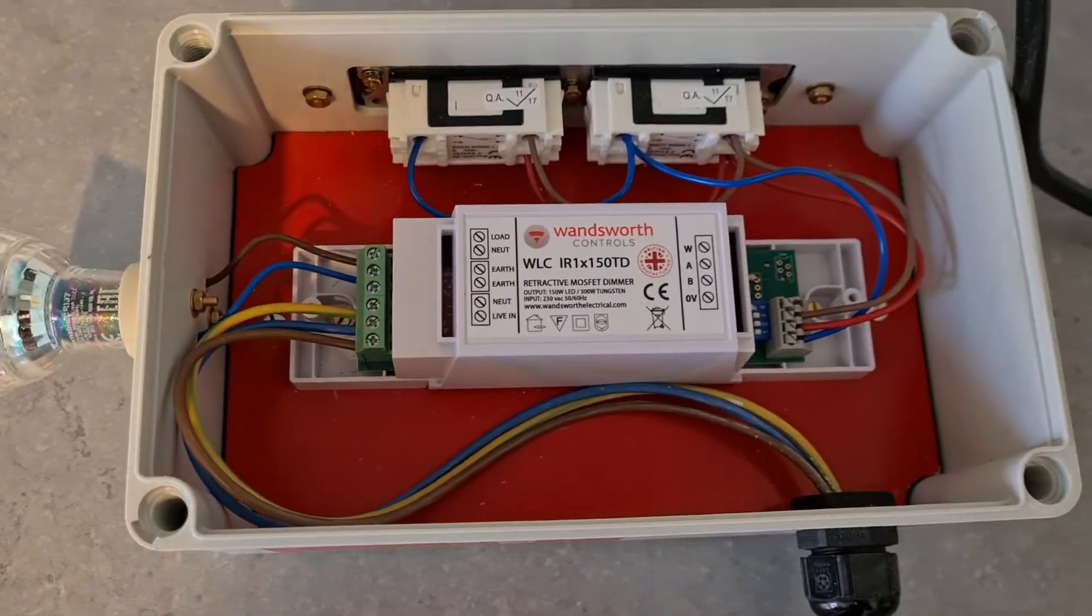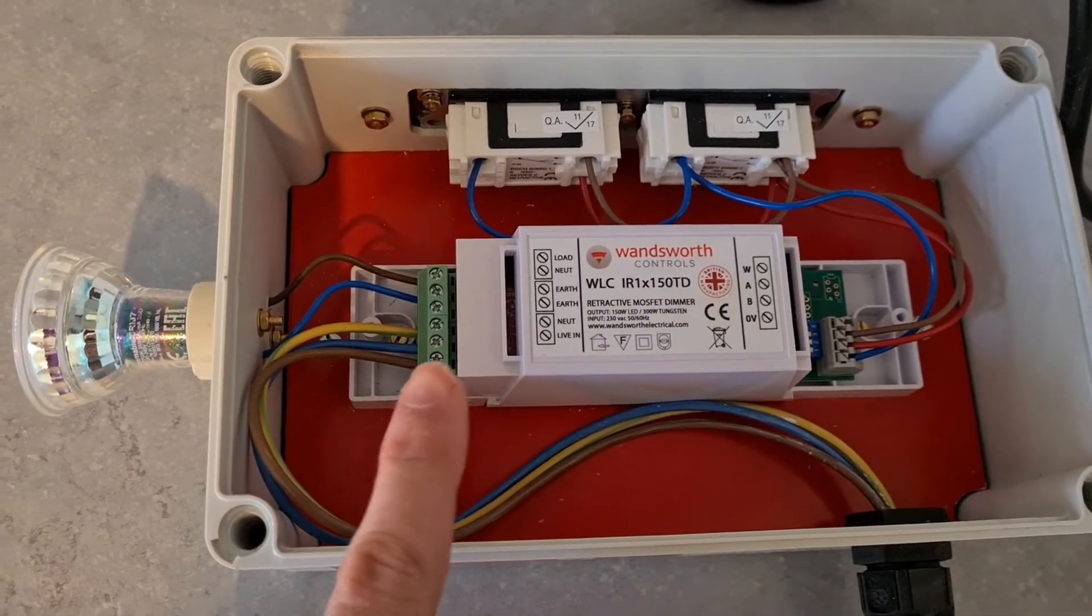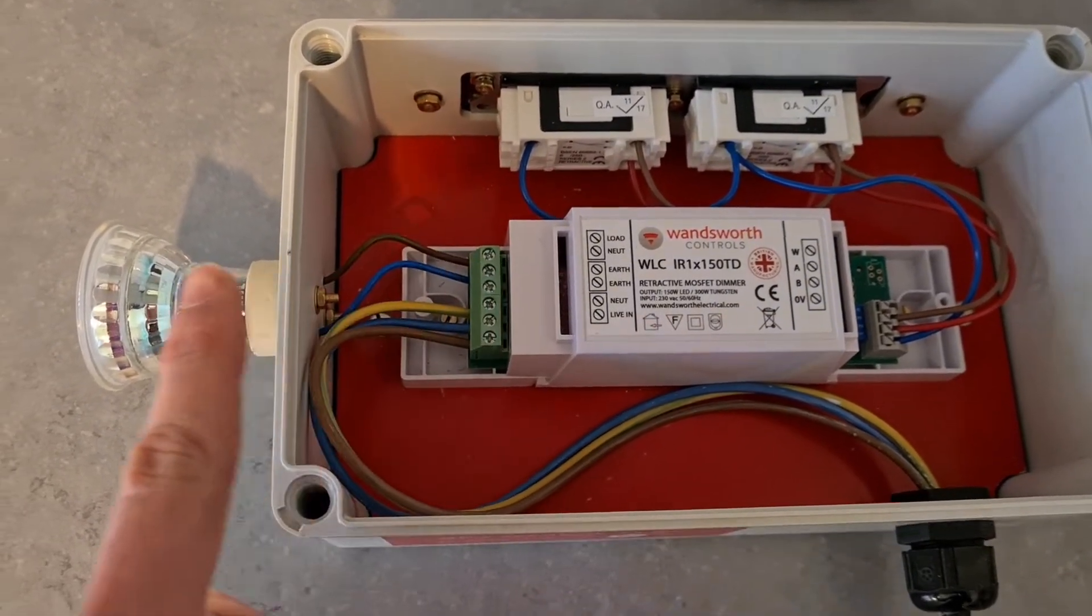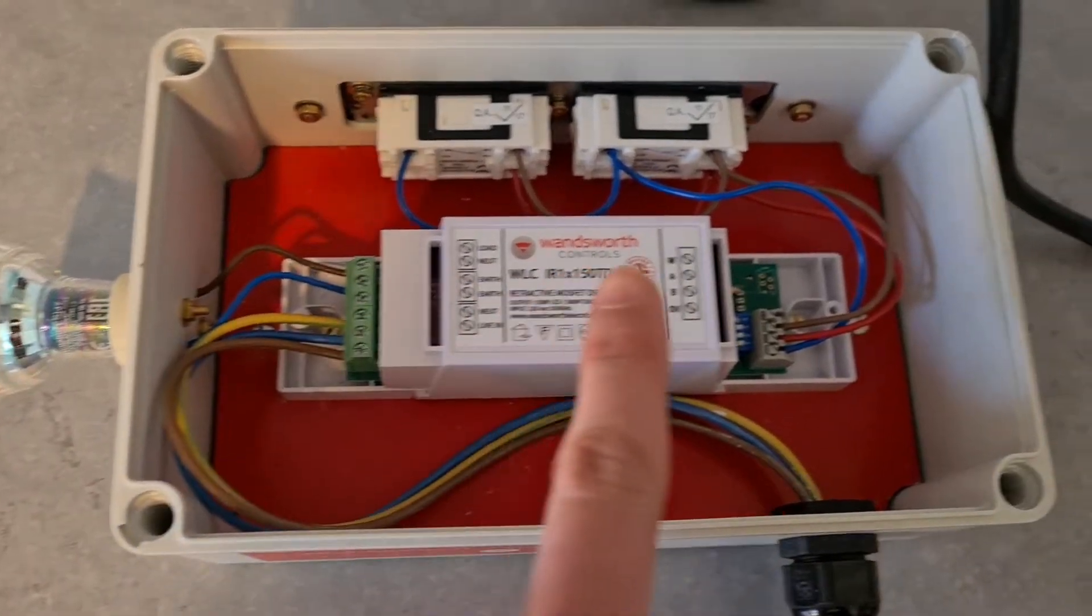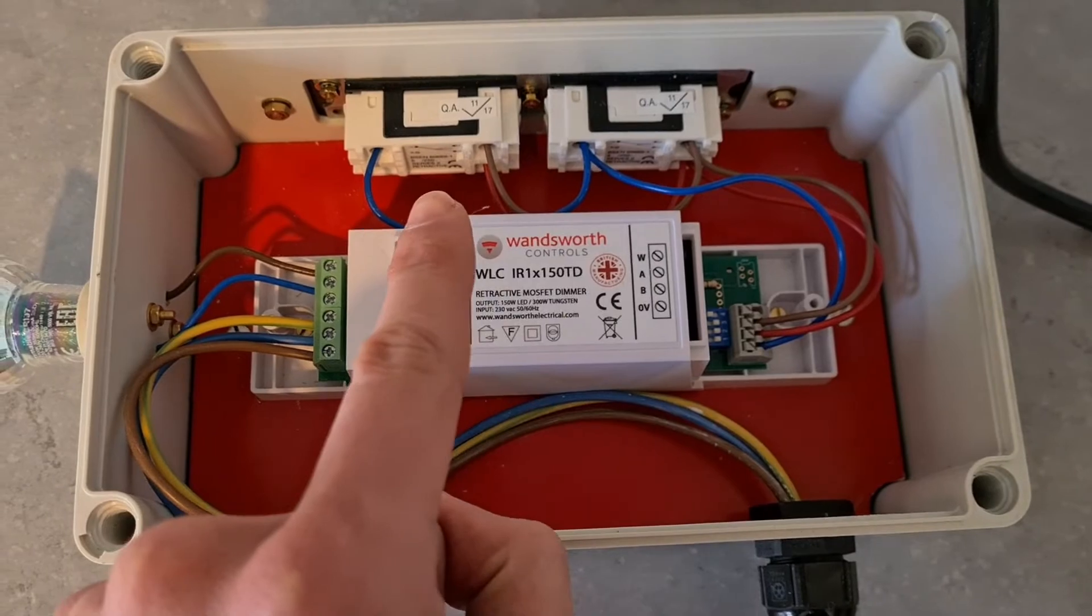A closer look at how the unit is connected, we've just got mains in, our dimmable mains out to our lighting circuit and then just our control wiring off to our retractive switch modules.